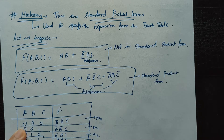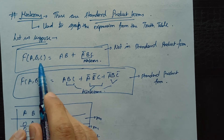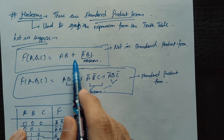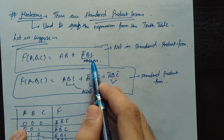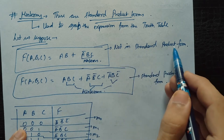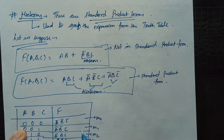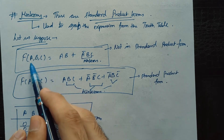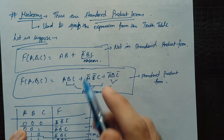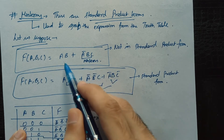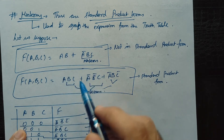Suppose we have a function of three variables A, B, and C defined as AB plus A-bar·BC. This function is not in standard product form. For a min term, the total number of variables in the function must be present in each term. Here AB has all three variables, but A-bar·BC is missing C, so it is not a min term.